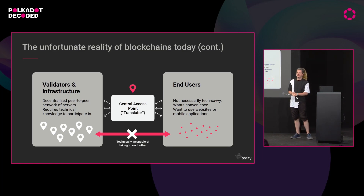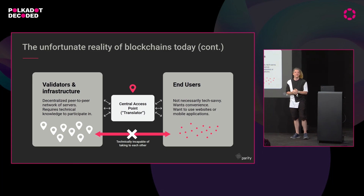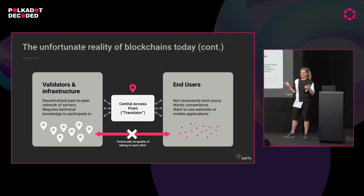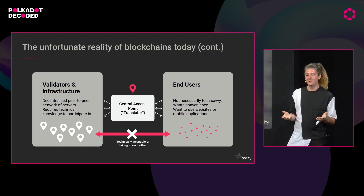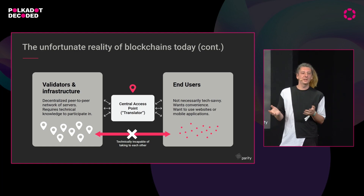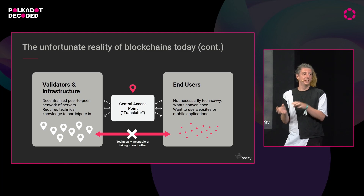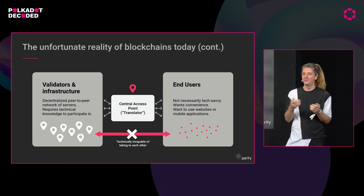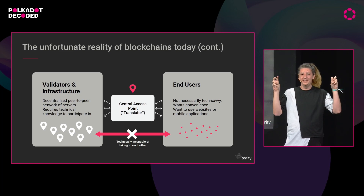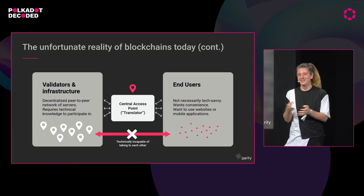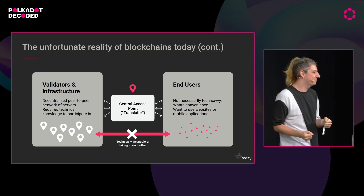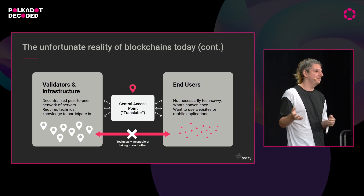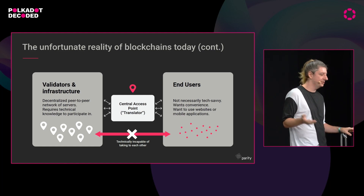Why is this the way it is? It's a technical problem. It took us two years to fix, so it's not trivial. Simply, end users and validator nodes cannot talk to each other, so the central access point acts as a translator. The consequence is that the software running on end users' machines needs to blindly trust what this translator is saying. The translator converts validator language into information displayed on screen, but the end user's software doesn't know if the information is correct — it just assumes it is.